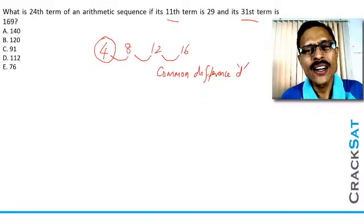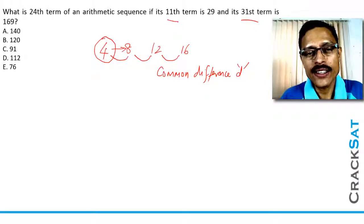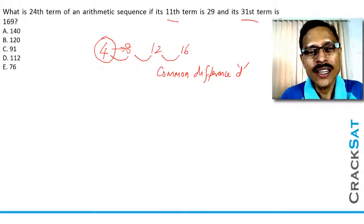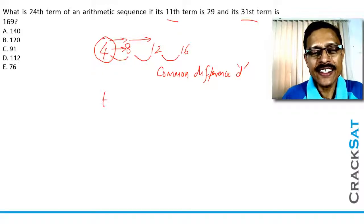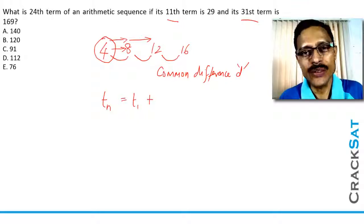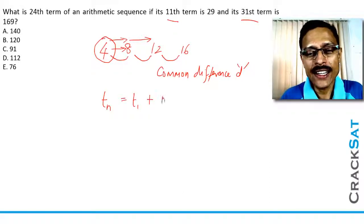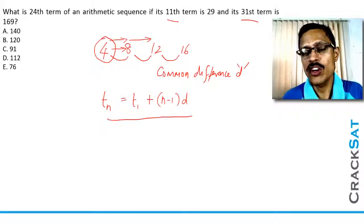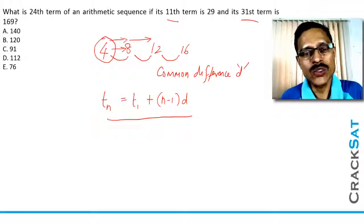Now we will quickly see how to find out the nth term of an arithmetic sequence. I will pick the first term and add a common difference to it to get the second term. To get the third term, I add the common difference twice. So to get the nth term, I add the common difference n minus 1 times. Here is the formula: the nth term Tn is equal to the first term T1 plus n minus 1 times the common difference.